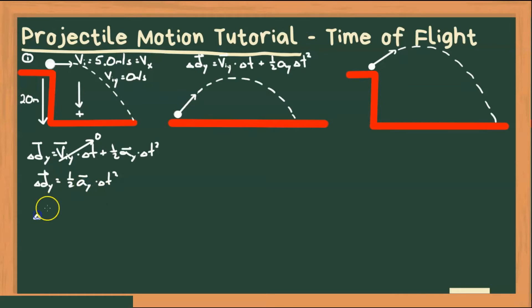And acceleration due to gravity is going to be positive 9.8 meters per second squared. And we can rearrange that for time. Multiply by 2, divide by a, and take the square root gives us time as square root of 2 delta dy over a. Now for this example, we can plug these into our calculator. So we have 2 times 20 meters, all over 9.8 meters per second squared, gives us a time of 2.02 seconds.